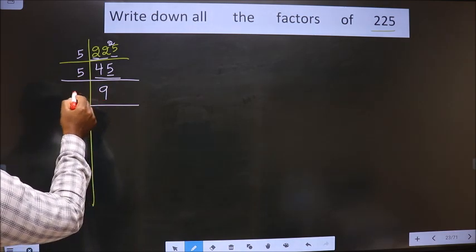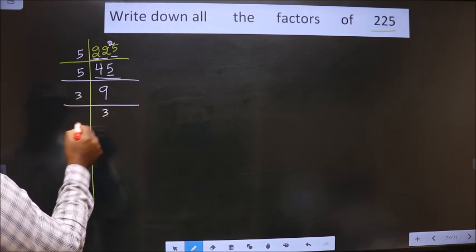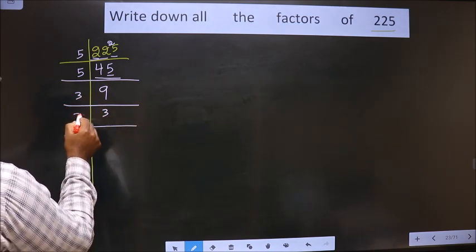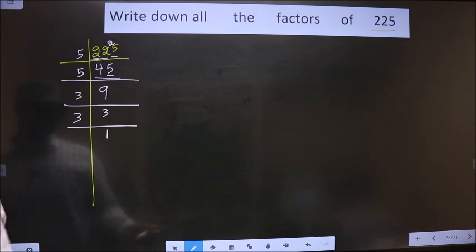Now, we have 9. 9 is 3×3. Now, 3 is a prime number, so 3 and 1.